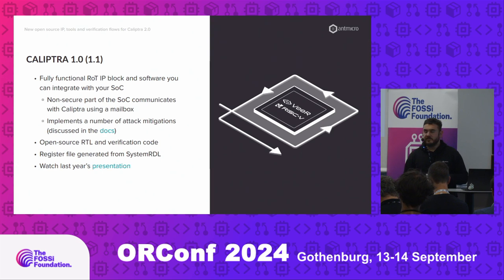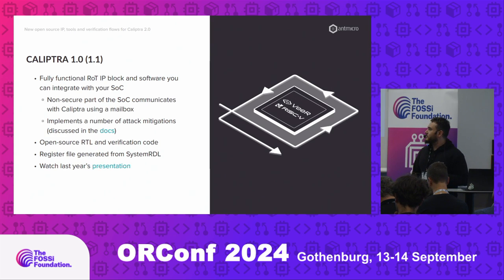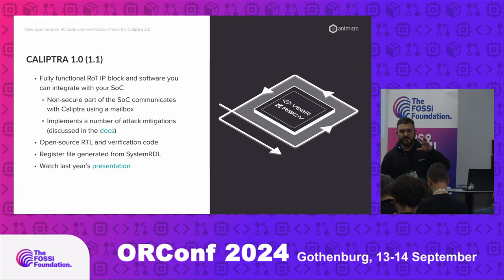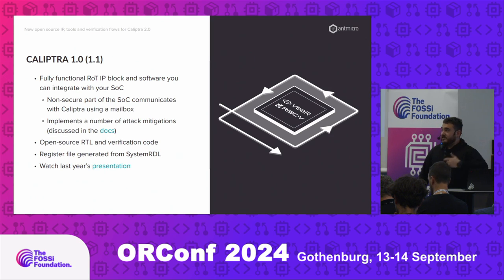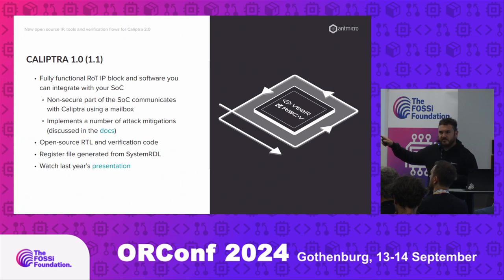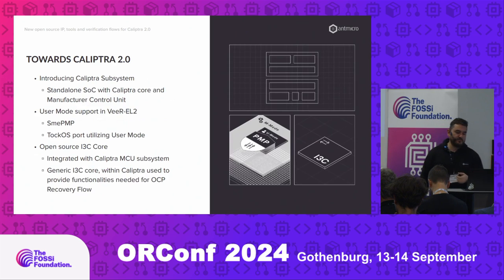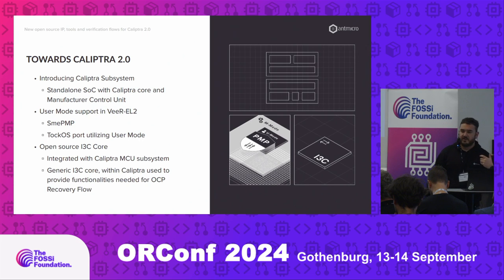One of the cool things is that this project uses SystemRDL for register file description. There's a lot of open source tooling around SystemRDL — it's a really cool language for designing register files and then generating code around them. If you want to know more about Calyptra's current status, you can watch last year's presentation from Michael at AllConf. Back then we were at version 0.8, so it's not about 1.0, but it's more or less accurate. Once 1.0 was released, work started on getting to 2.0.